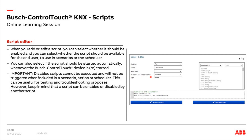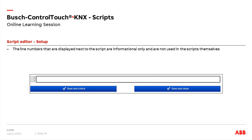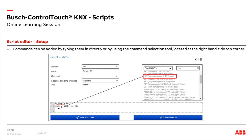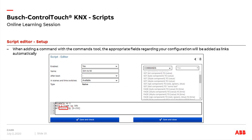The editing box is where we put all the commands we need. It would be very difficult to add commands manually without help, so we have the command box on the top right side. You can theoretically type commands manually, or you can just click on the command you need and it will be automatically added. For example, selecting 'set byte component to value' adds that command to the editor. Gray fields in the command indicate where you click to select group addresses — the system will filter and show only addresses with the correct data point type.